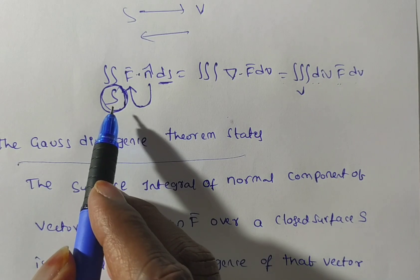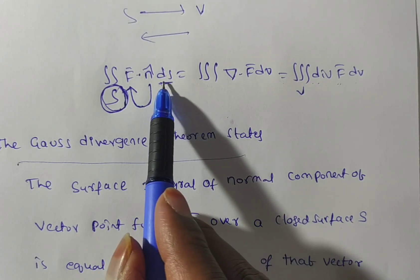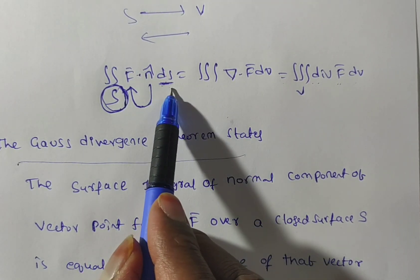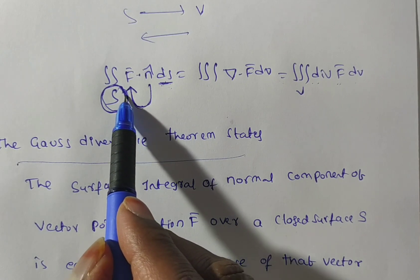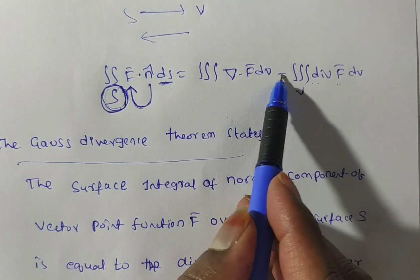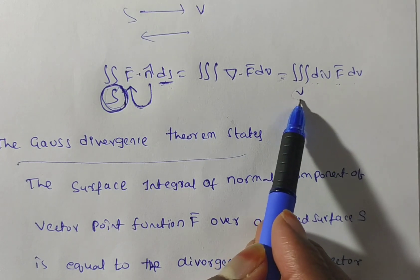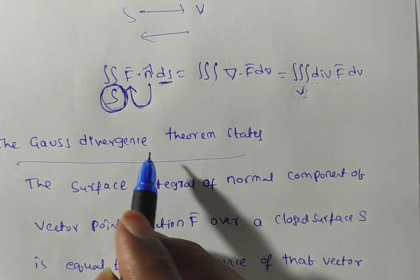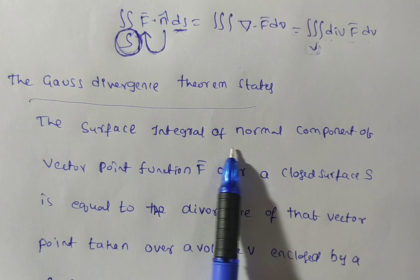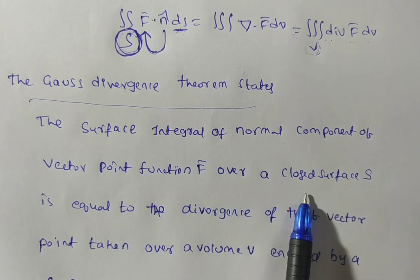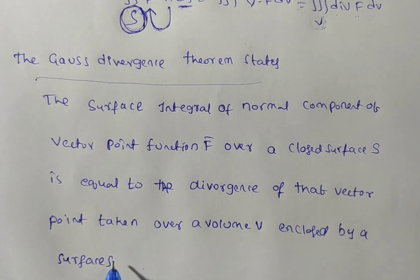The Gauss divergence theorem states that the surface integral of the normal component of a vector point function F-bar over a closed surface S is equal to the divergence of the same vector F-bar over a volume V enclosed by the closed surface S.